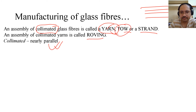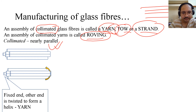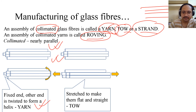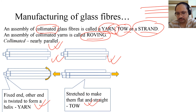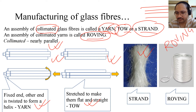If you fix one end and twist the other end, you get a yarn — just like what you get in a nylon rope. If you have straight fibers and stretch them, you get the tow — remember it is T-O-W. This is a strand, and this is a roving.